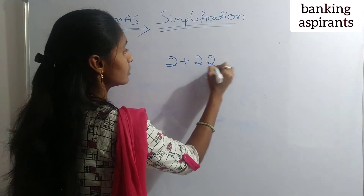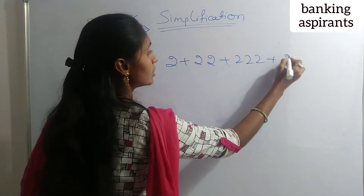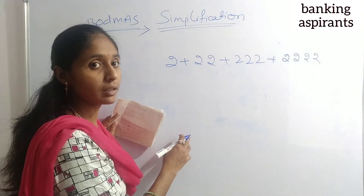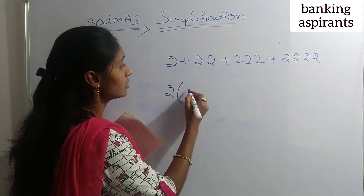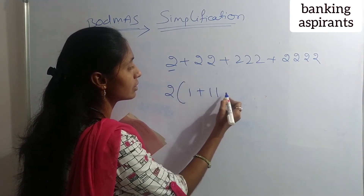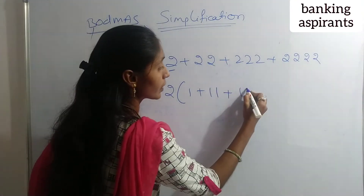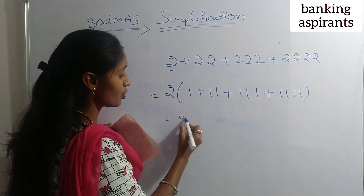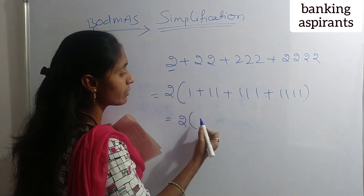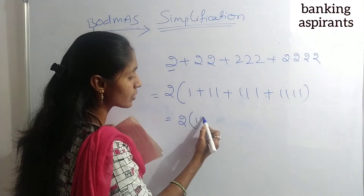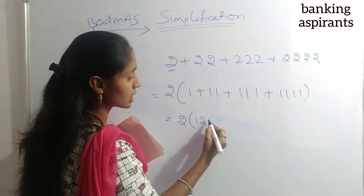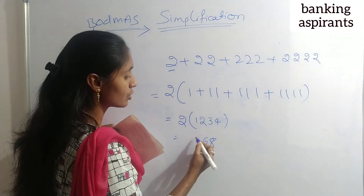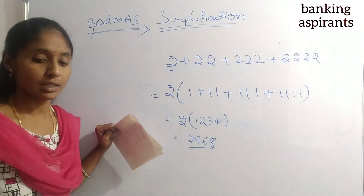Next question: 2 plus 22 plus 222 plus 2222. To solve this type, take 2 as common: 2 into (1 plus 11 plus 111 plus 1111). Now count the ones: 1, 11, 111, 1111 — adding gives 1234. Then 2 times 1234 equals 2468. The answer is 2468.